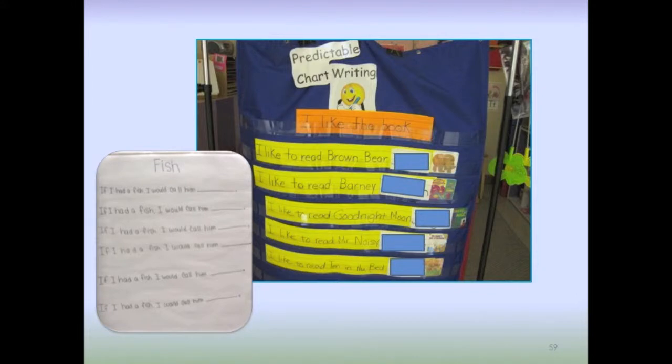Different ways that teachers have addressed predictable chart writing: sometimes it's on chart paper, but some of them began to experiment with doing it on just strips of paper. What they liked about that is they could do it right on the surface where the kids are — if you use a cube chair with a little desk, you could do it right there. It was very interesting to see how the kids' level of engagement changed with proximity. Just having it close to them sometimes made all the difference.